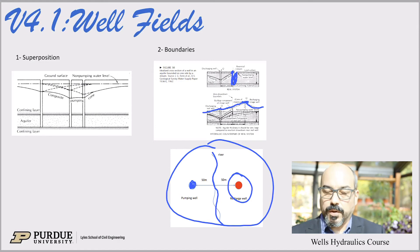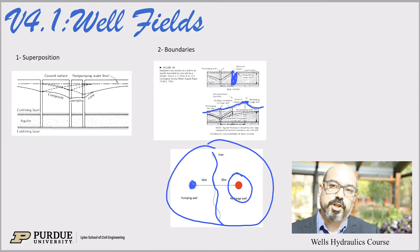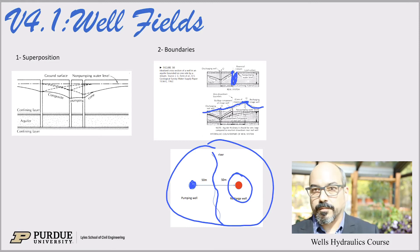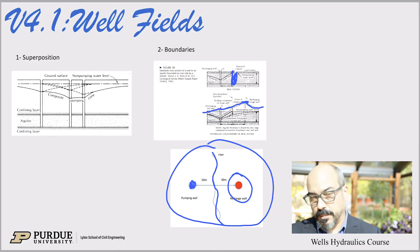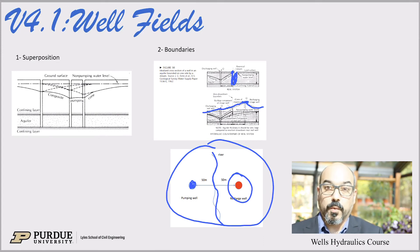Another case is if you have a solid boundary — a no-flux boundary — essentially a mountain range or a granite igneous rock outcrop that doesn't let water flow at all, so an impervious boundary. How do we deal with those with imaginary image well solutions? We'll do examples of those too.